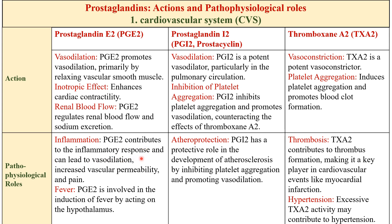Prostaglandin E2 contributes to the inflammatory response and can lead to vasodilation, increased vascular permeability, and pain. When the permeability of the blood vessels increases during inflammation, it facilitates the movement of immune cells, proteins, and other substances from the bloodstream to the affected tissues. Prostaglandin E2 is also involved in the induction of fever by acting on the hypothalamus.